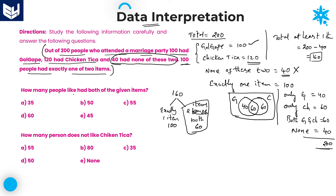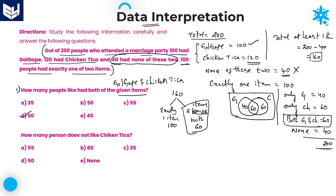Now look at the first question: how many people had both the given items? Both given items means both Chicken Tikka and Golgap. From our Venn diagram, both Golgap and Chicken Tikka together is 60 members. Looking at the options, option D is the right answer — 60 people are taking both items together.